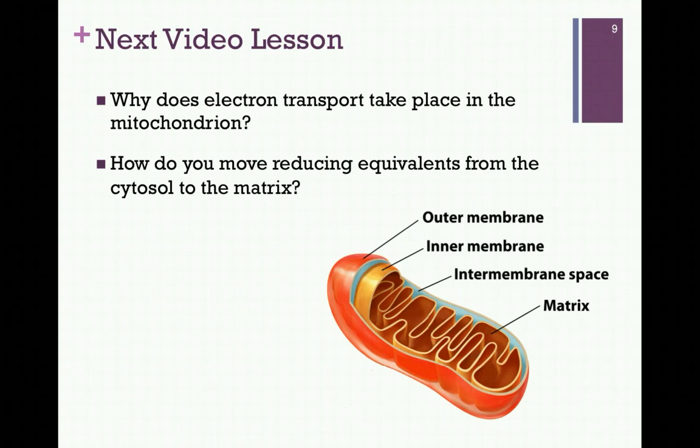In our next video lesson, we'll learn that electron transport takes place within the mitochondrion, and we want to look at the benefits of that arrangement. That being true, we also need to see how we can move those reduced cofactors from the cytosol to the matrix inside the mitochondrion.